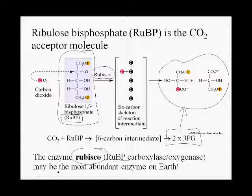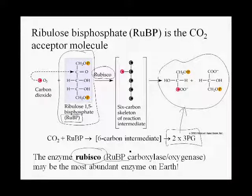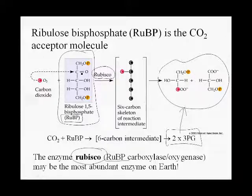If you think about it, rubisco is probably the most abundant enzyme on Earth. Every single atom of organic carbon on Earth got here essentially by the action of rubisco. If you think about the petagrams of carbon fixed worldwide on a global scale every year, virtually all of that is due to this one enzyme, rubisco. All photosynthetic organisms have rubisco, and many chemosynthetic organisms also use rubisco for carbon fixation.